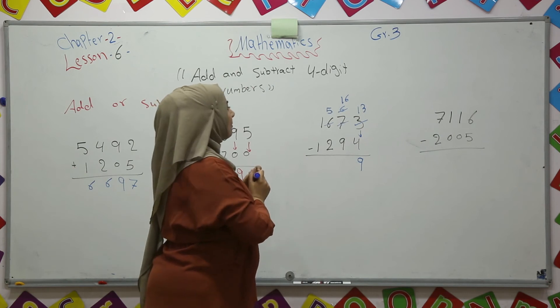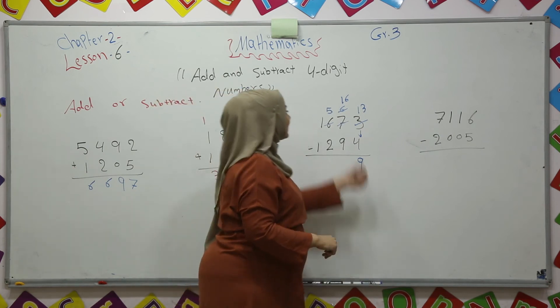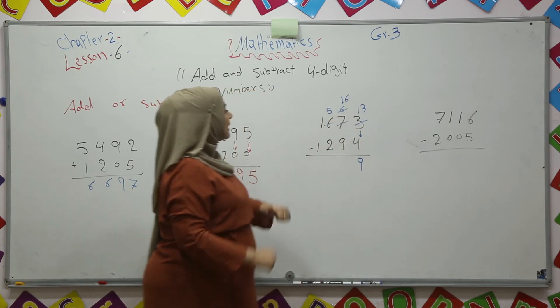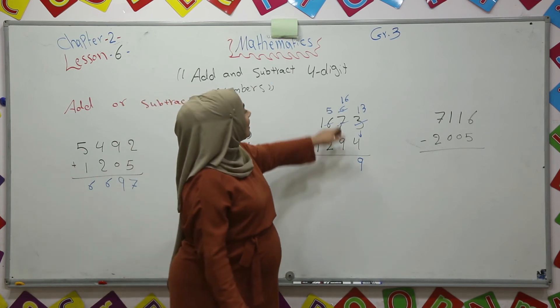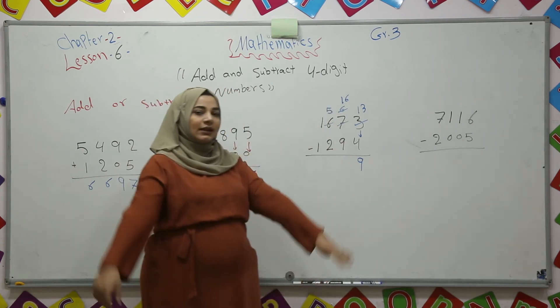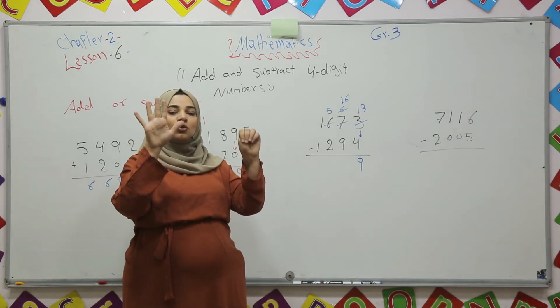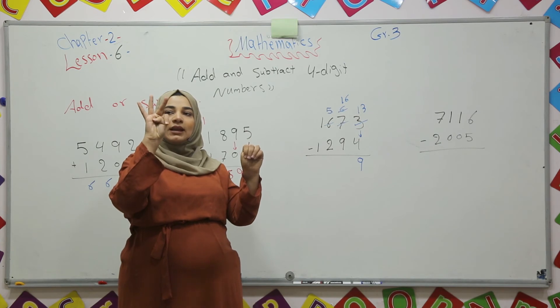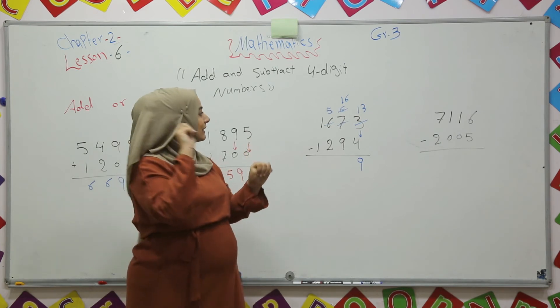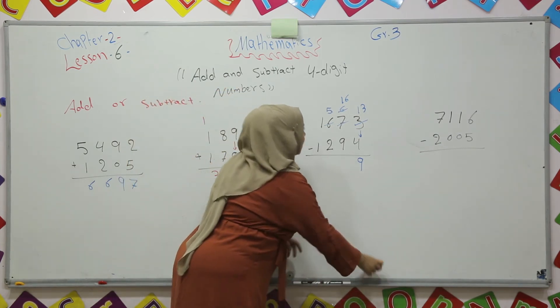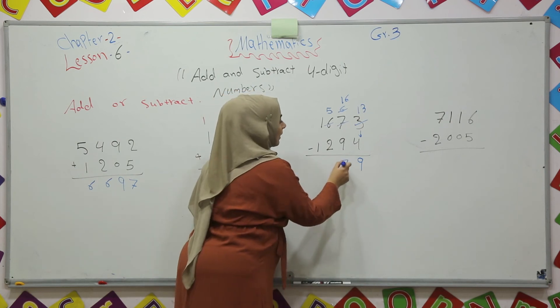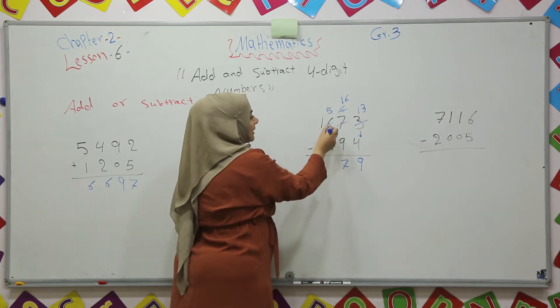Sixteen minus nine. Count back nine numbers from sixteen. Sixteen, fifteen, fourteen, thirteen, twelve, eleven, ten, nine, eight, seven. So the answer is seven.